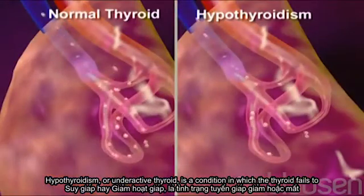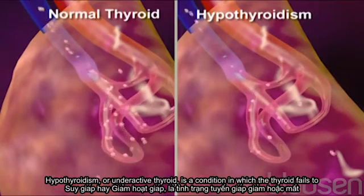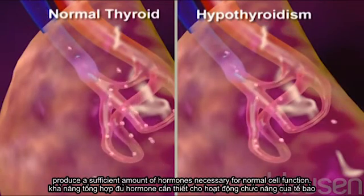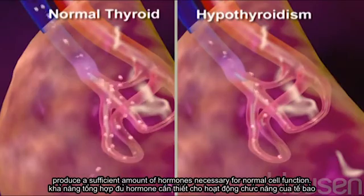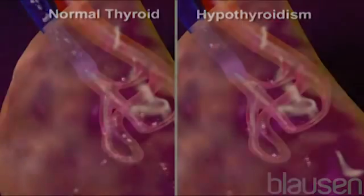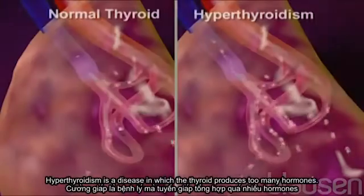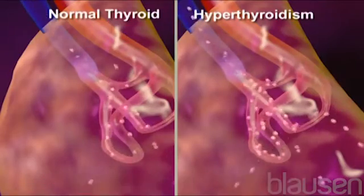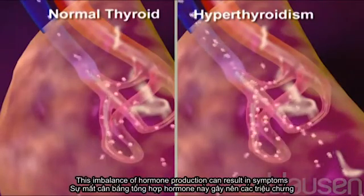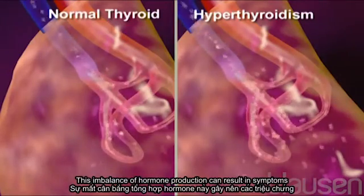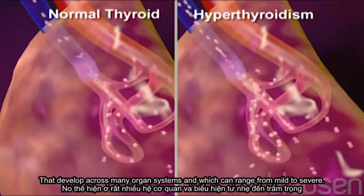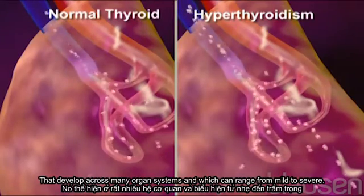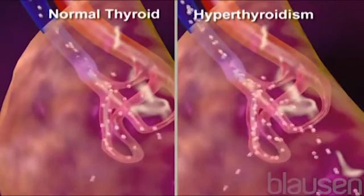Hypothyroidism, or underactive thyroid, is a condition in which the thyroid fails to produce a sufficient amount of hormones necessary for normal cell function. Hyperthyroidism is a disease in which the thyroid produces too many hormones. This imbalance of hormone production can result in symptoms that develop across many organ systems and which can range from mild to severe.